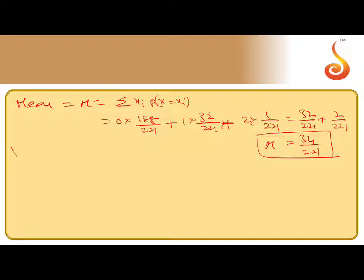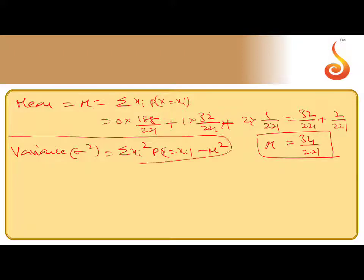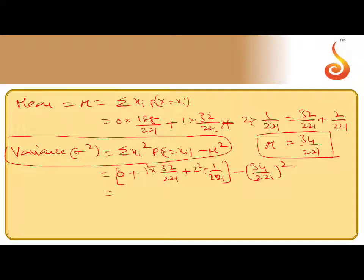Next, variance. Variance is sigma square equals sigma xi square, P of X equal to xi minus mu square. This is the formula for variance. So this one first one, 0 anyhow. Next one, xi 1 square, 1 square into 32 by 221. Next 2 square into 1 by 221 minus mu square, mu square means 34 by 221 whole square. So this is 36 by 221 minus 34 whole square by 221 whole square.